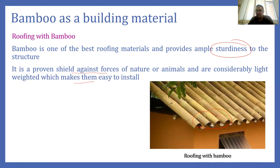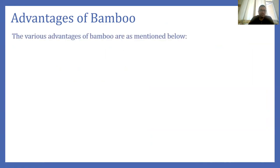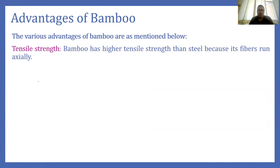Bamboo is lightweight and can be easily transported and installed. Now, discussing the advantages of bamboo — bamboo is highly strong in tensile strength. The tensile strength of bamboo is very high, even higher than steel, because its fiber runs axially. The grain direction is along the length of the bamboo, so if we try to stretch bamboo, its tensile strength will be higher than steel.